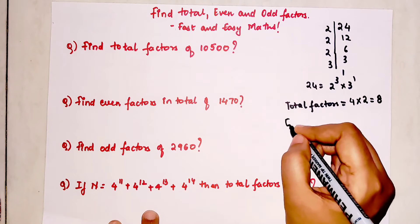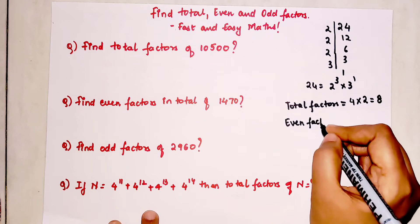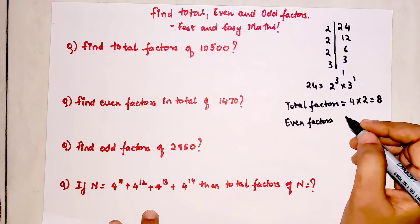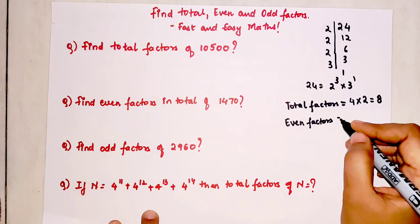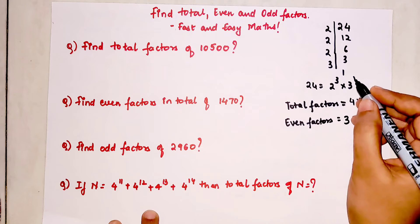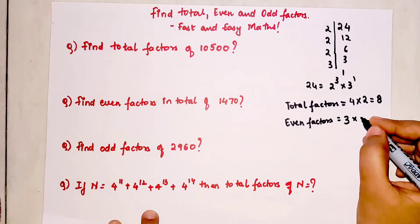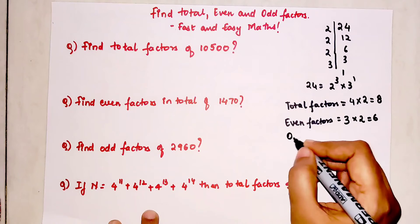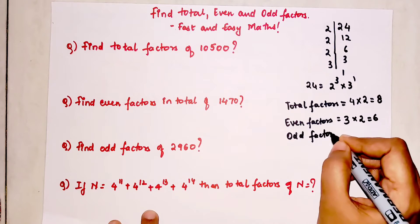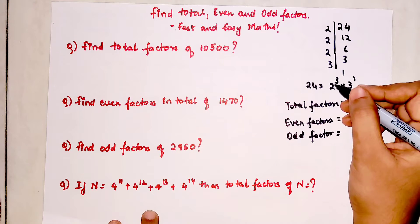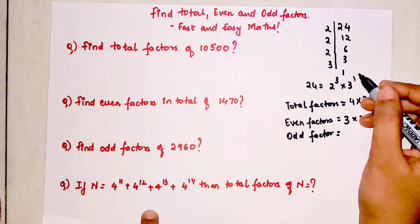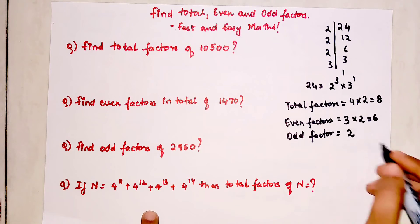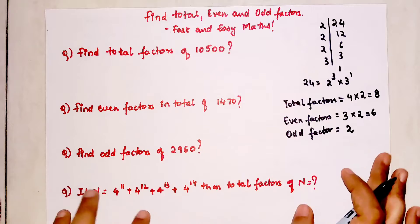To find the even factors, keep the index of the even prime as it is and raise the index of the odd prime by 1: 3 × (1+1) = 3 × 2 = 6 even factors. To find the odd factors, simply ignore the even prime factor entirely and increase the odd prime's index by 1: that gives us 2 odd factors.